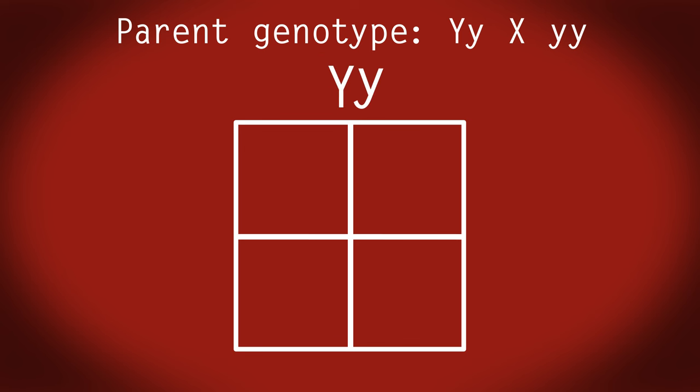Now let's do our Punnett squares. We start with an empty grid like this. If we crossed a heterozygous Yy and a recessive yy parent together, we enter the first parent's genotype here. Split them and enter one Y in the first column and the other y in the second column. And the second parent here doing the same thing. One y in the top row and the second y in the bottom row.